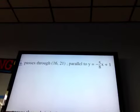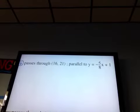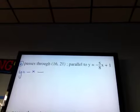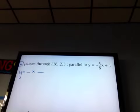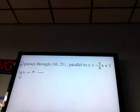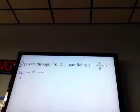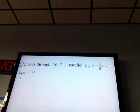I'm skipping down to that one. Passes through (16, 21) and is parallel to y = -5/8x + 1. So every question I'm doing fill in the blank, basically. I need to find m, and I need to find b. Parallel and perpendicular tell you about m. What is the slope of the line y equals negative 5/8x plus 1? What's the m for that line? The negative 5/8.